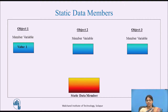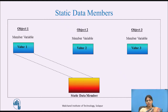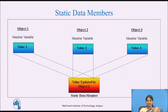Suppose the value held by the data member of object 1 is value 1, the value for data member of object 2 is value 2, and the value for object 3 is value 3. At another instant, when object 1 is trying to access the static data member, the value is updated by object 1. When object 2 is trying to access the static data member, the value is updated by object 2. Similarly, when object 3 is trying to access the static data member, the value is updated by object 3.